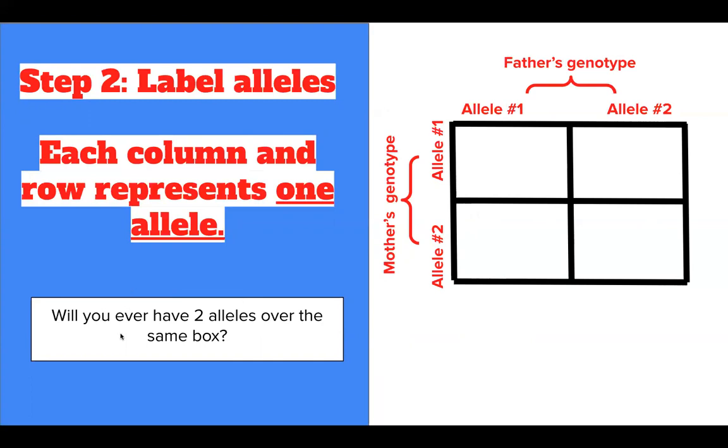Now this question over here to the left, will you ever have two alleles over the same box? The answer is no, each box represents one allele.